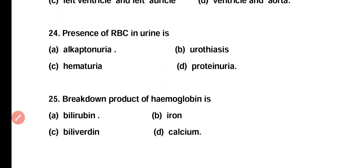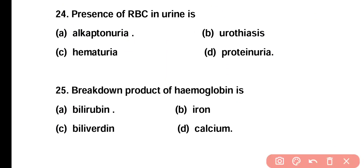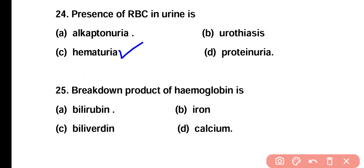Question number 24. The presence of red blood cells in the urine is called: alkaptonuria, urolithiasis, hematuria, or proteinuria? Correct answer is option C. Hematuria is the presence of red blood cells in the urine.